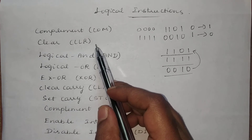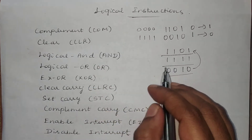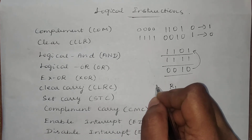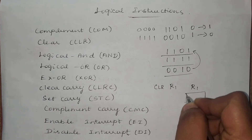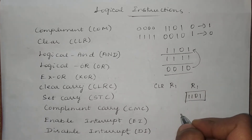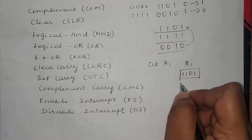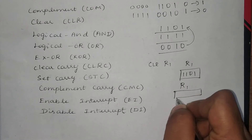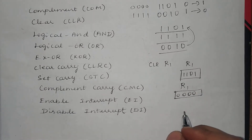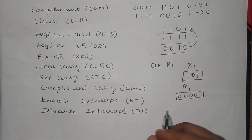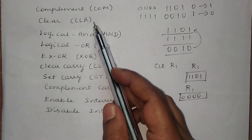The next instruction is the clear instruction. Clear means it will clear the entire set of data. Suppose you want to clear register R1, which holds the data 1101. After executing the clear instruction, the result will be 0000. Whatever data it already has does not matter — it will clear the entire set of data to all zeros.